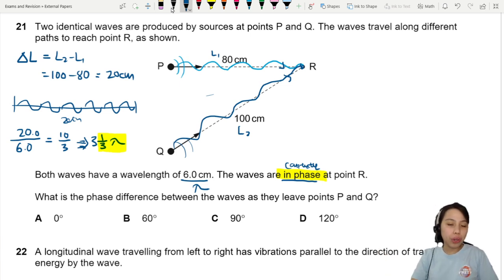That's because at the source, when they leave in the first place, they are not in phase already. So you need to find this 1 over 3 wavelength is due to what?